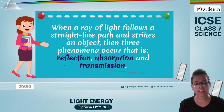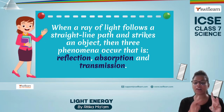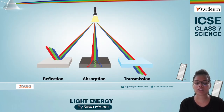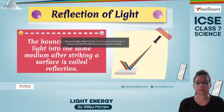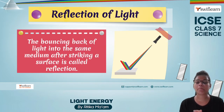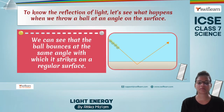Without light we cannot see anything. So how are we able to see things, and what happens when light falls on any surface? Whenever a ray of light travels in a straight line path and strikes any object, three things happen: reflection, absorption, and transmission. Reflection is the going back of the ray, absorption is being absorbed by the object, and transmission is passing through the object. Reflection of light is defined as the bouncing back of light into the same medium after striking the surface.